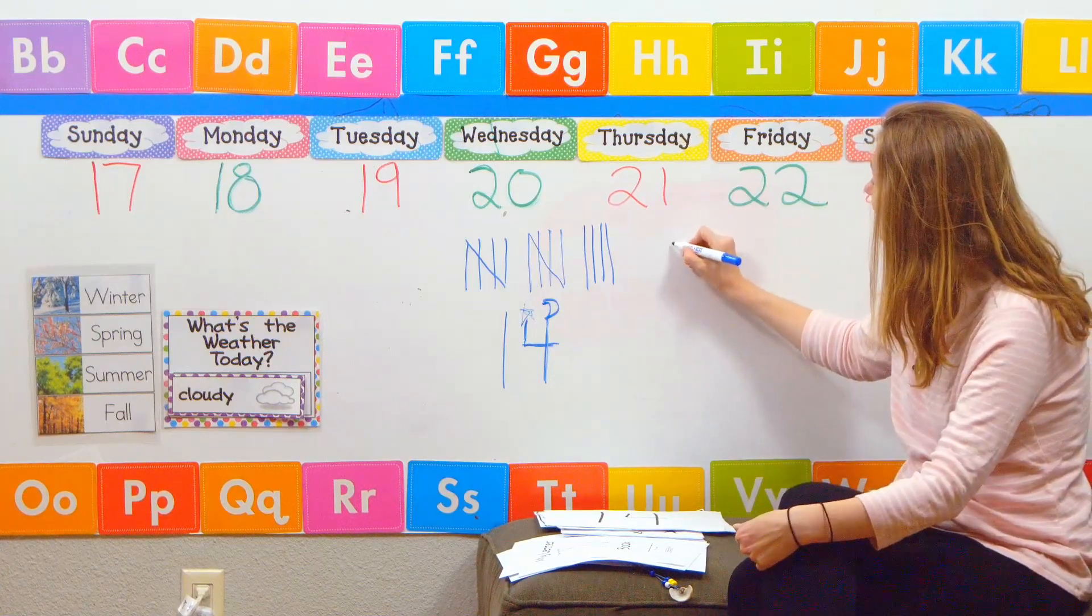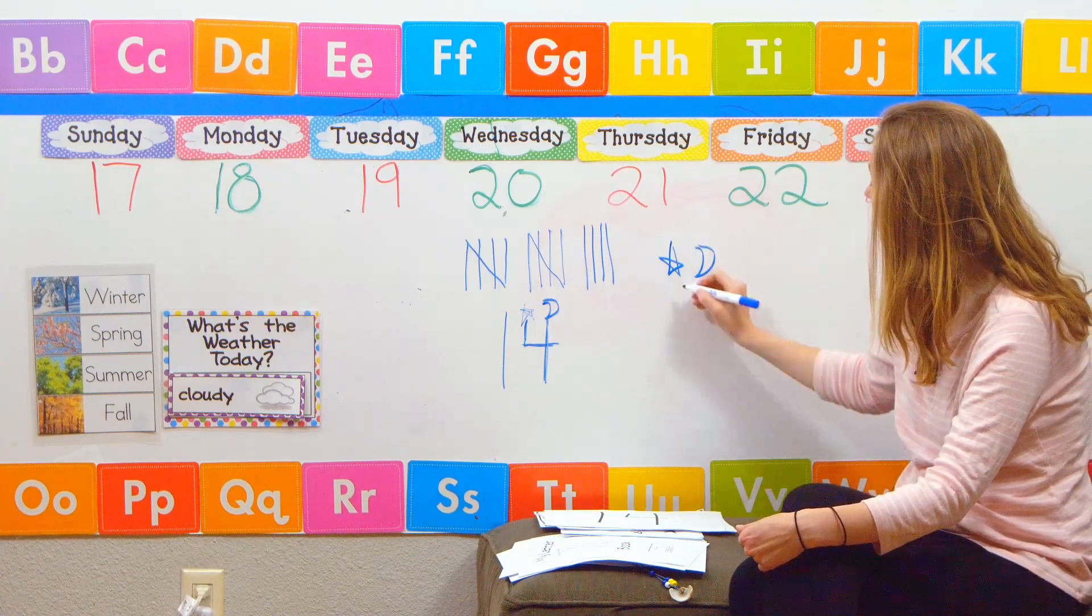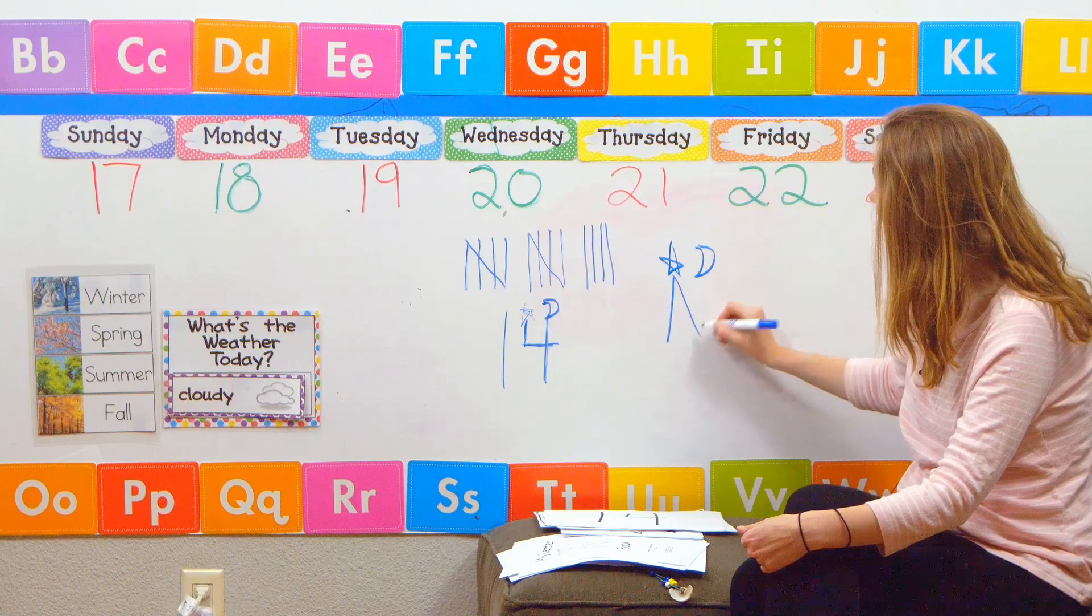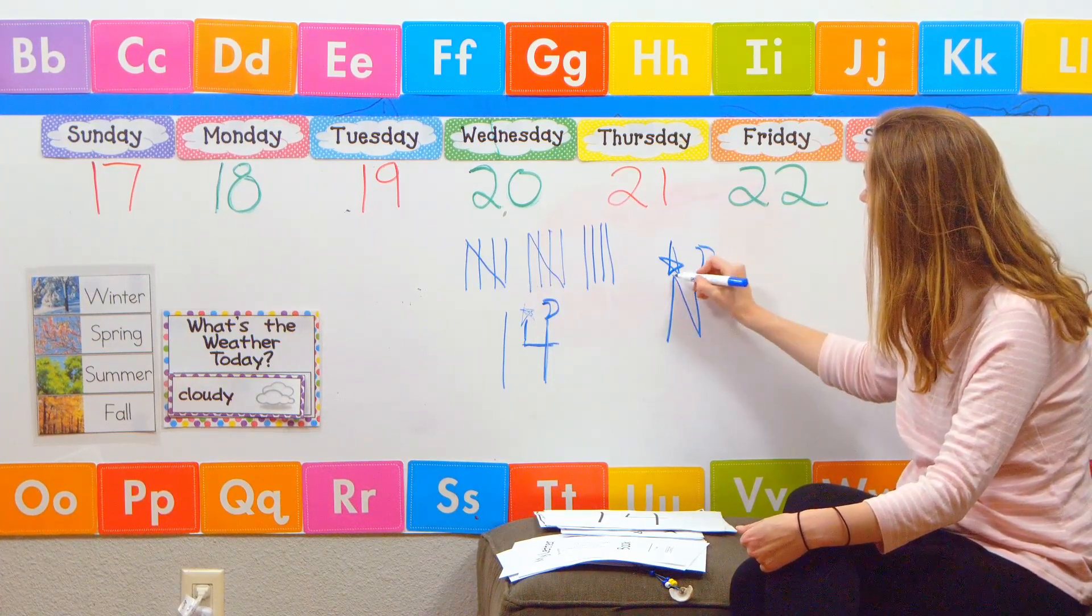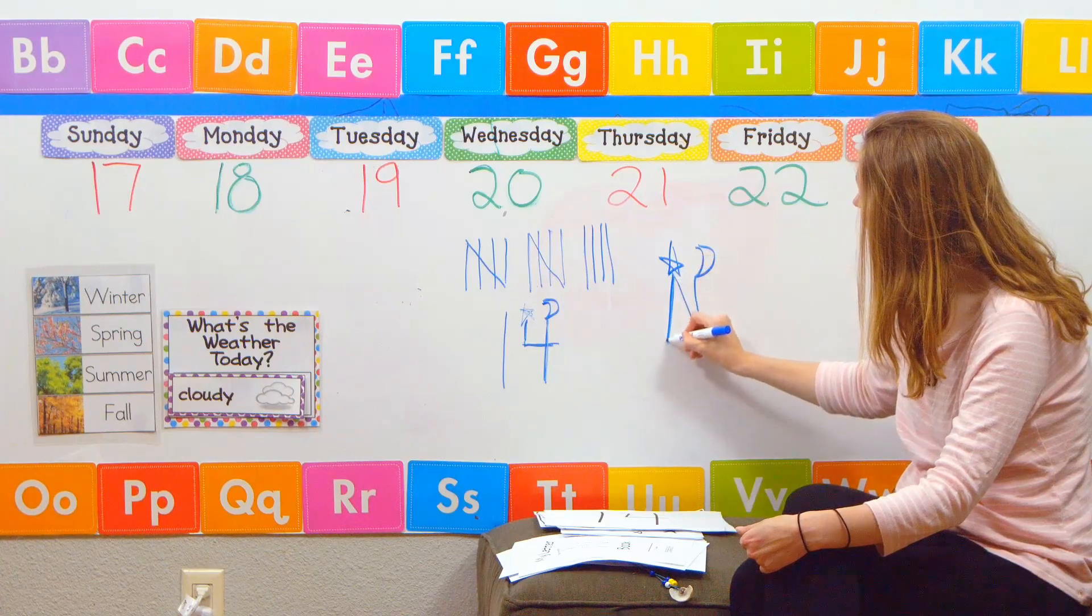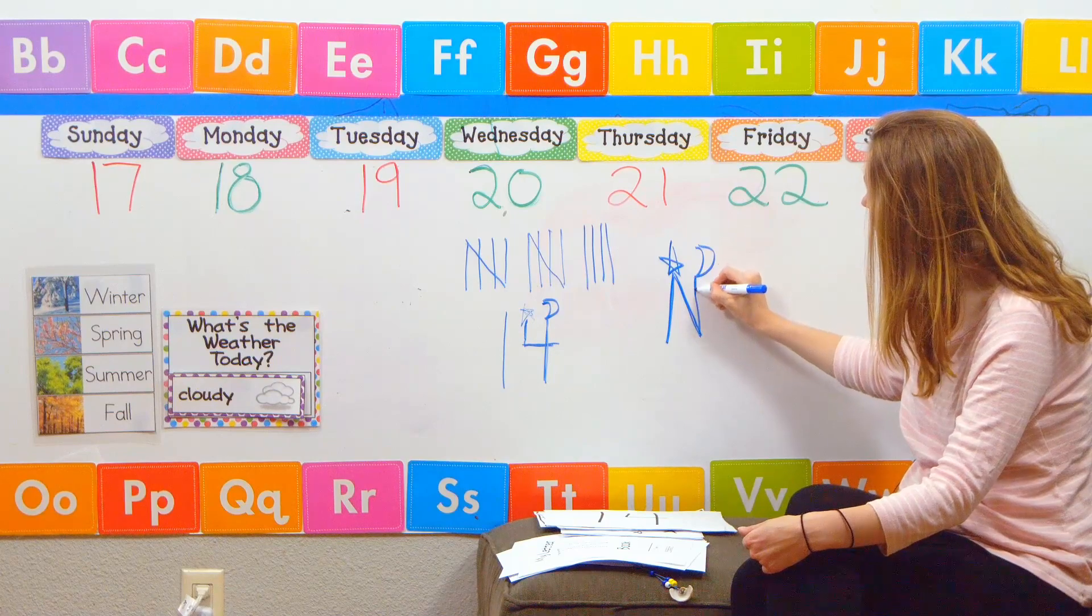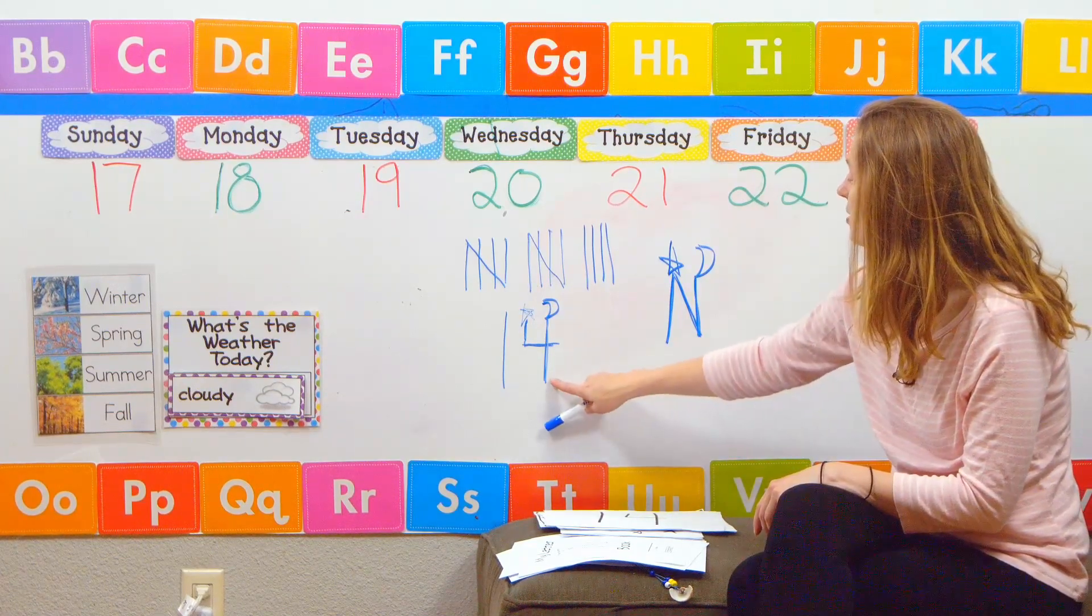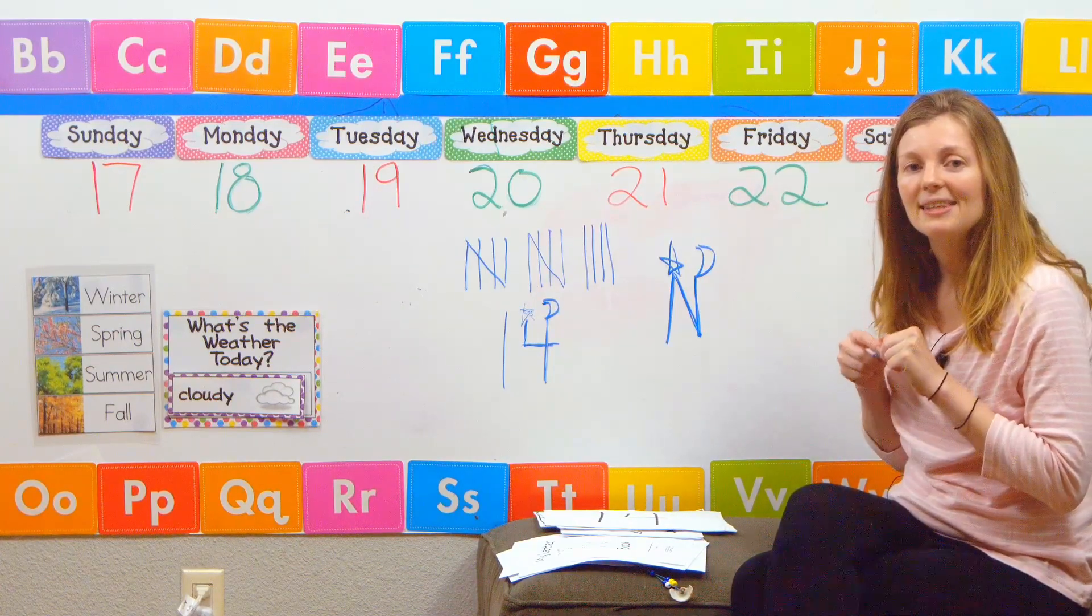We're also going to write the letter N. So we're going to make my star and my moon to help with rights and lefts. We're going to go down the ladder. We're going to slide. And then we're going to go up to the moon and make another ladder. So start at the star, make a ladder. Then we're going to slide, make a diagonal line. Start up at the moon and make another ladder. And that's how you make your letter N. So our number is 14 and our letter is N. And it goes na, na, na.